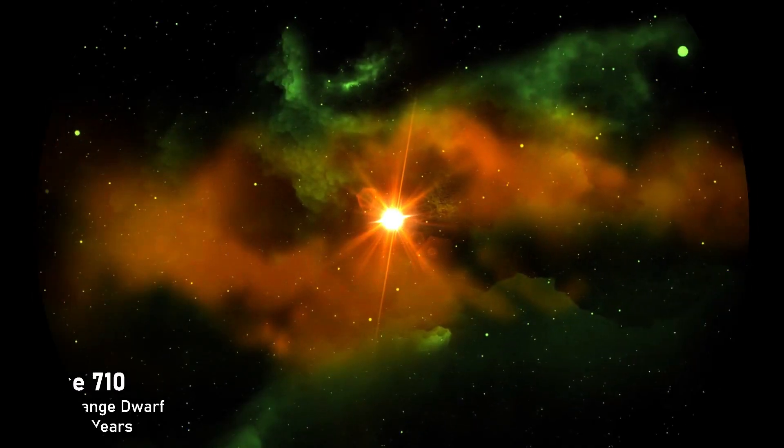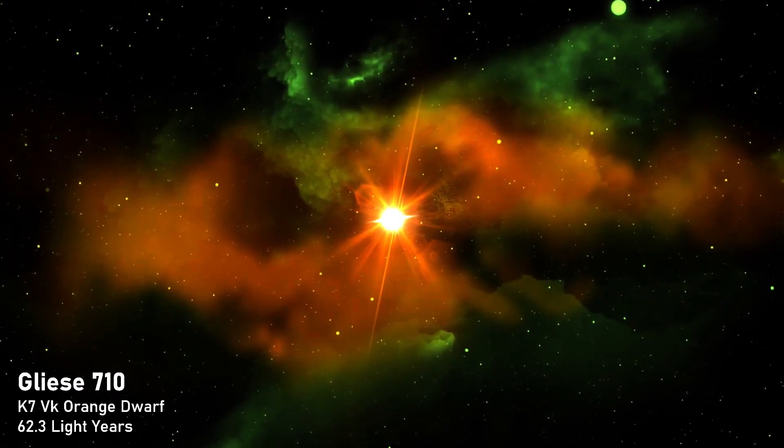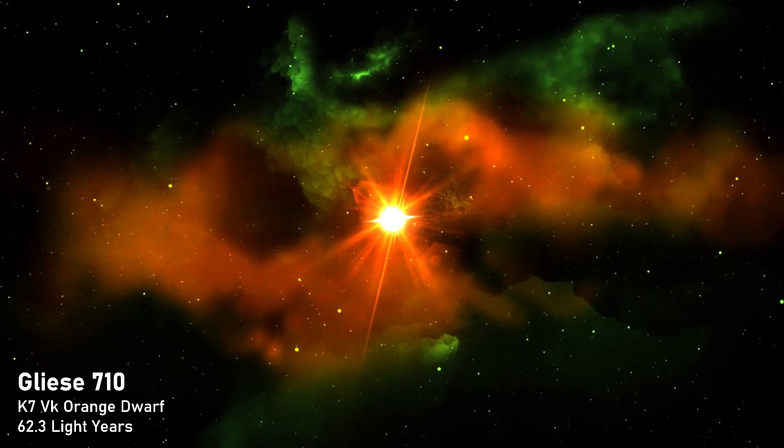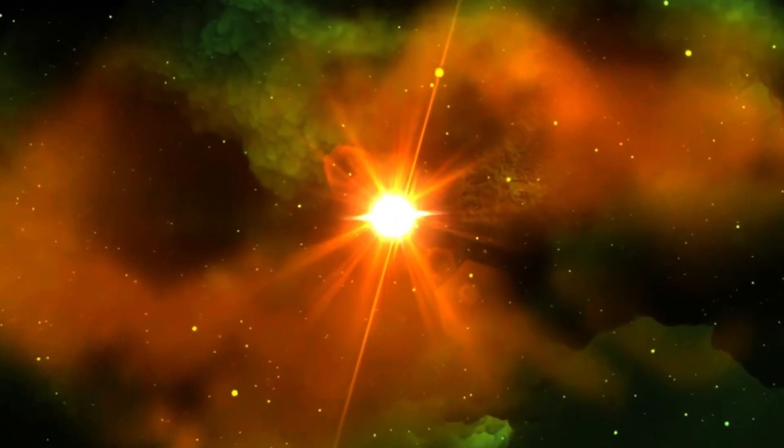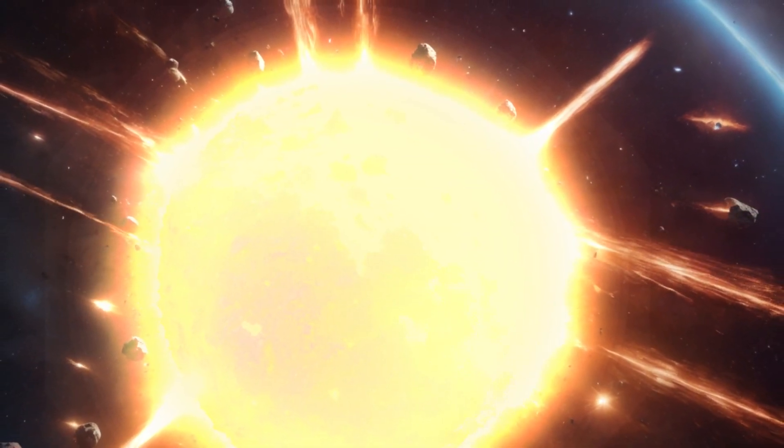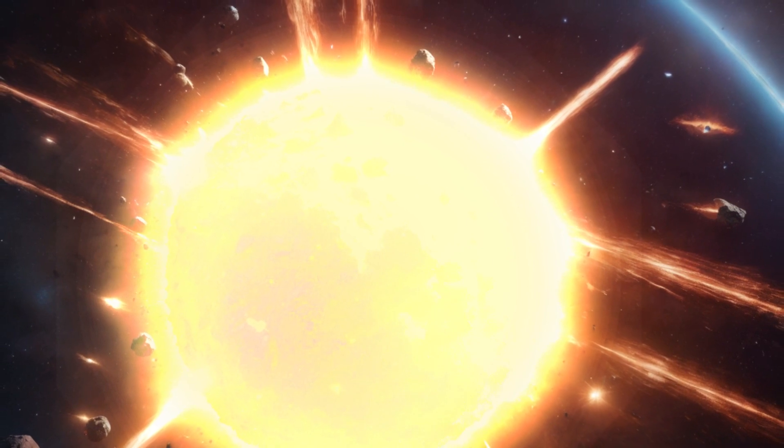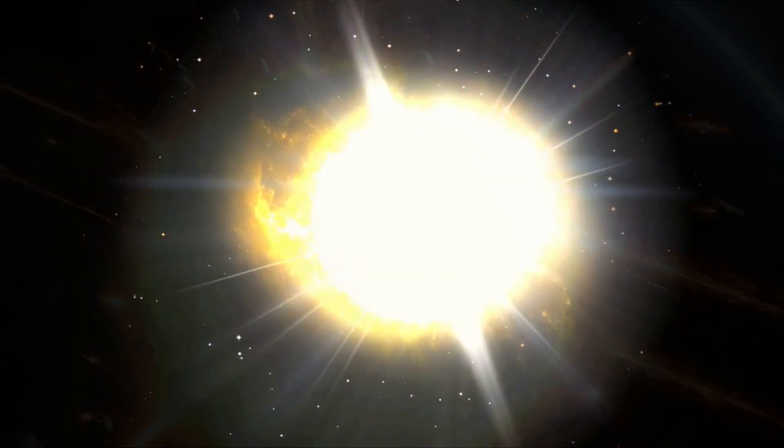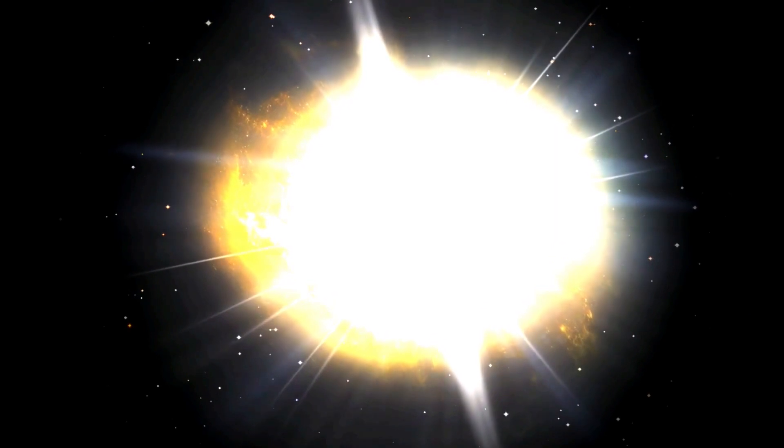Gliese 710 is an orange colored star with a mass roughly equivalent to 0.6 times that of our sun. You might think this relatively obscure and unremarkable celestial object can't possibly be the subject of one of our videos. The thing is, Gliese 710 is in the preliminary stages of an upcoming cosmic dance with our sun that may well change our solar system forever.